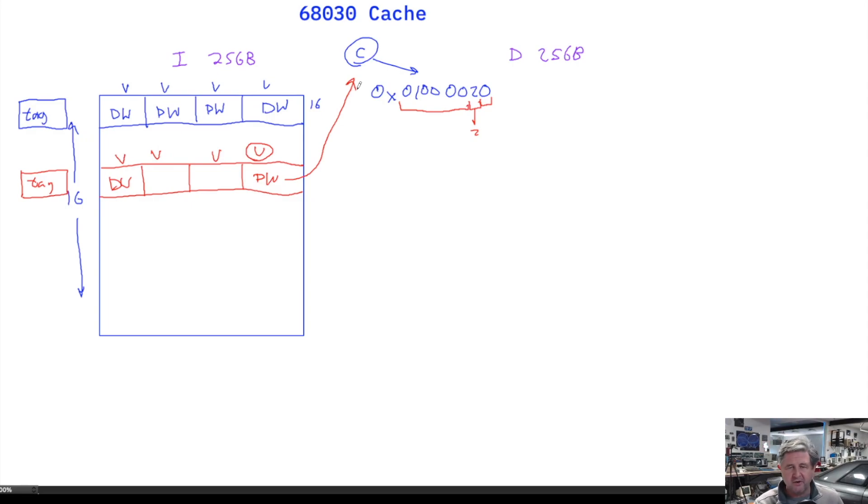However, if the tag does not match, then it knows it has a cache miss. It will go out to real memory and grab that new D-word from memory. On its way back to the core CPU, it will put the actual current address in the tag, invalidate all the D-words except for the one it was reading in, put that D-word back into the cache, and then set the valid bit.